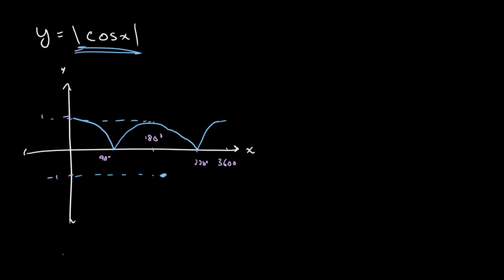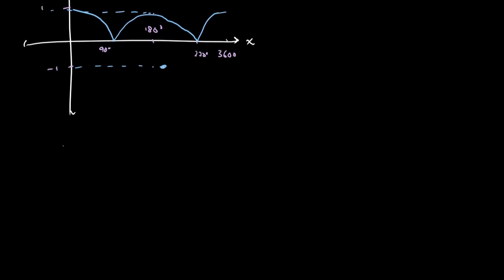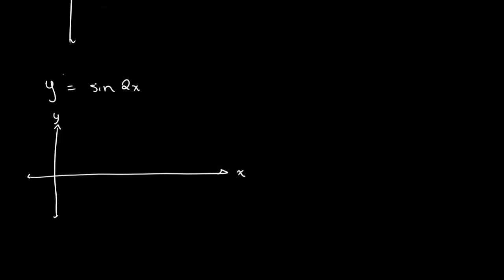That's simple enough. We just had to take our original graph and reflect everything that was negative in the x-axis and we got our absolute value graph. Now let's say that we have to sketch the graph of y equals the absolute value of sine of 2x.